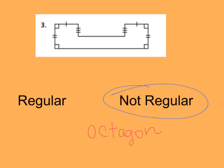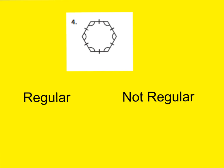For number four, please write down regular or not regular. You should be writing regular because all my angles are obtuse and all the lengths on each side are the same — they're all congruent. And what should we call this? Go ahead and count up all your sides: one, two, three, four, five, six. A six-sided polygon — you should be writing down hexagon.